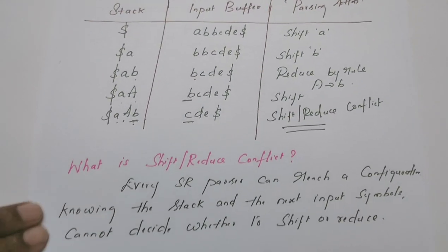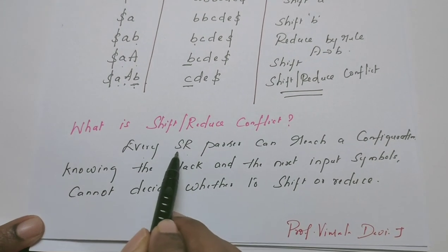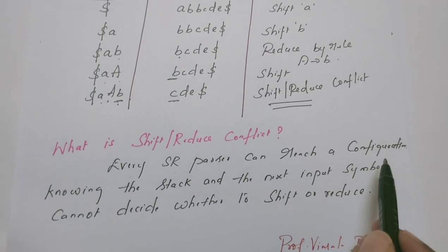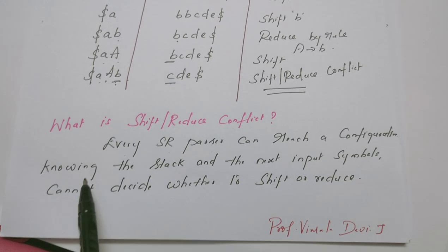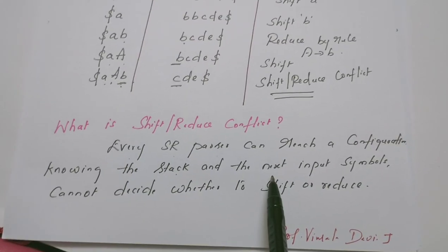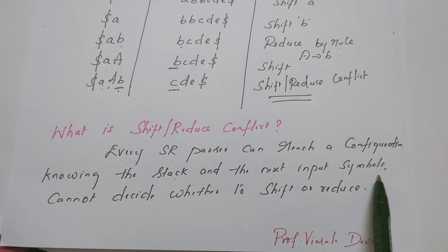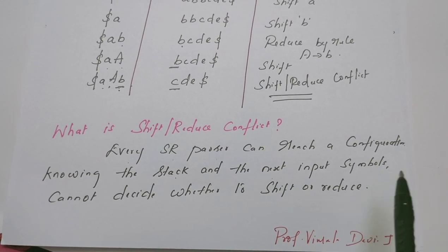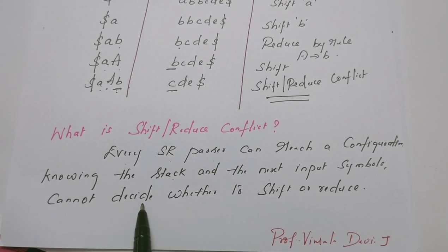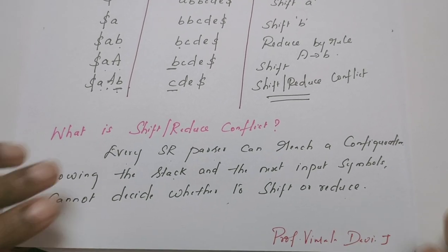Here is the definition: every shift-reduce parser can reach a configuration knowing the contents of the stack and what the next input symbols are in the input buffer, but the shift-reduce parser cannot decide whether to shift or reduce.